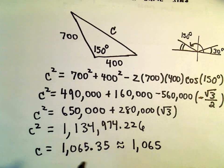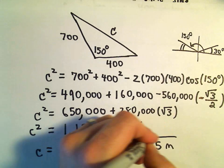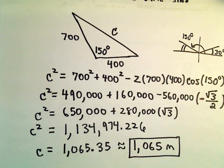I believe our original units were meters. So the second person is going to be 1065 meters away from the house, roughly.